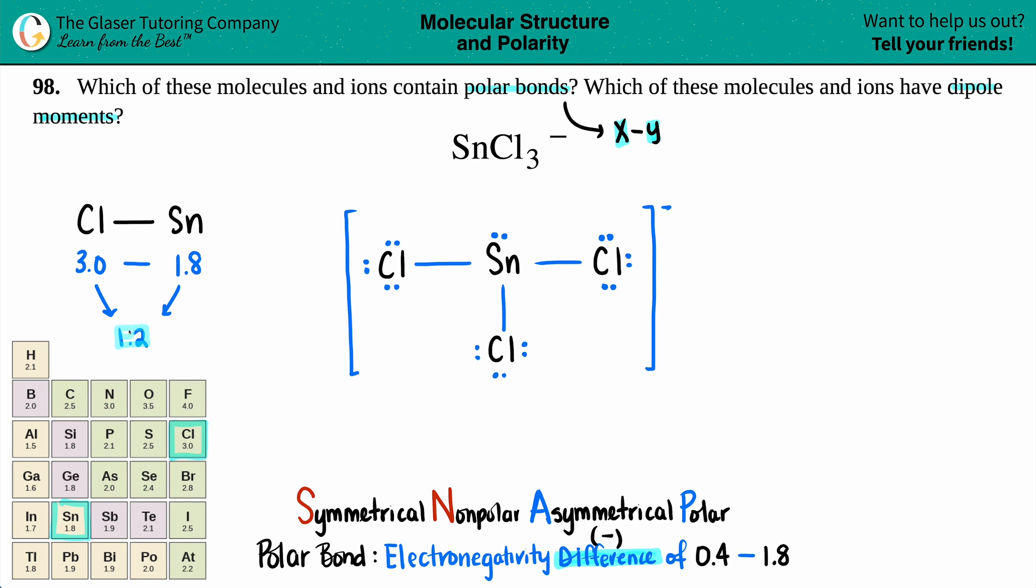It looks like we got 1.2 as our answer. And that looks pretty good to me. So does 1.2 make the cut? Yes, it does. It's in between 0.4 and 1.8. So we know that we're dealing with polar bonds. The first part is done. But now, do we have a dipole moment?